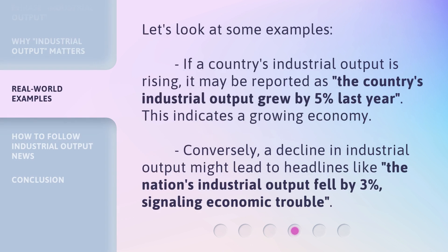Let's look at some examples. If a country's industrial output is rising, it may be reported as: 'The country's industrial output grew by 5% last year,' indicating a growing economy. Conversely, a decline in industrial output might lead to headlines like: 'The nation's industrial output fell by 3%,' signaling economic trouble.